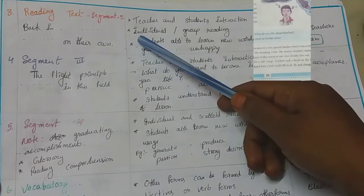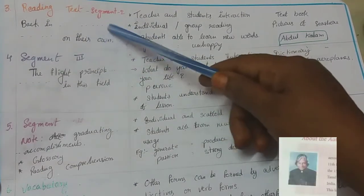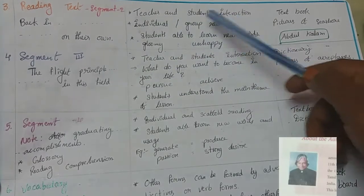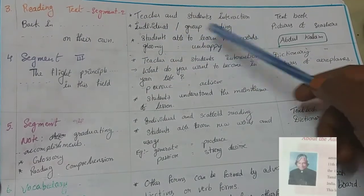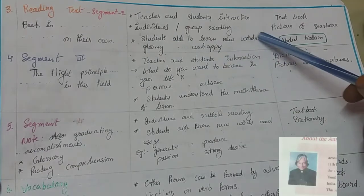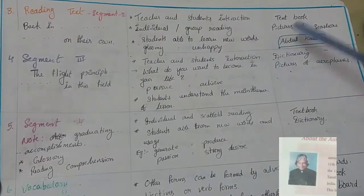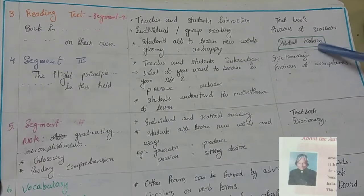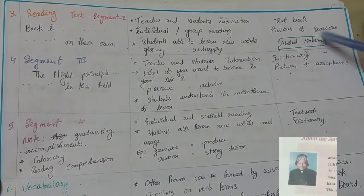In text segment 2, we cover the lesson from paragraph 2 on their own. There is teacher and student interaction, with individual and group reading by the children. Students are able to learn new words like gloomy (unhappy), etc. TLM needed: textbook, pictures of the seashore and a picture of Abdul Kalam.